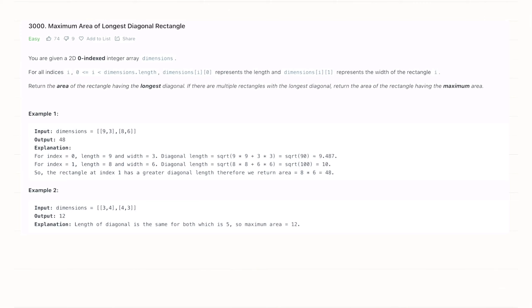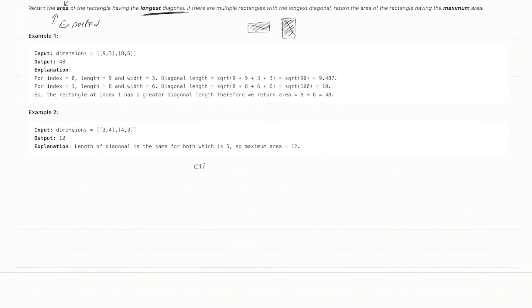You are given a 2D array named dimensions. At the first place you will get the length, and at the second place you will get the width. You have to return the area of the rectangle which has the longest diagonal. If multiple rectangles share the same diagonal length, you have to return the area of the one with the maximum area.